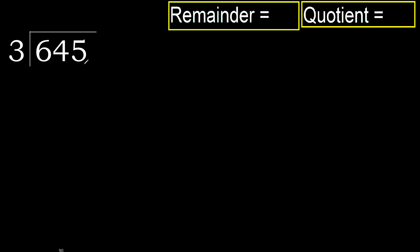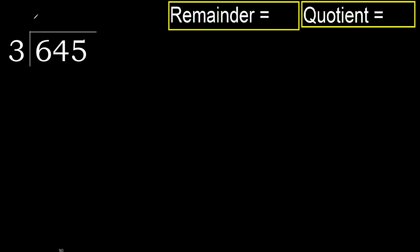645 divided by 3. 6 is not less, so we work with 6. 3 multiplied by which number is nearest to 6 but not greater? 3 multiplied by 3 is 9 — 9 is greater. Multiplied by 2: 6 is not greater. 6 minus 6 is 0. Next.